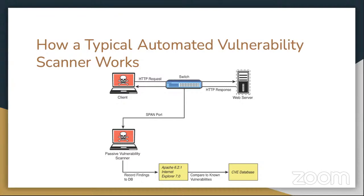For example, having a client and a server with a span port on the switch and watching the web traffic, realizing that the client is running Internet Explorer 7 and the server is running Apache 6.2.1. You can take those two and find vulnerabilities for both.